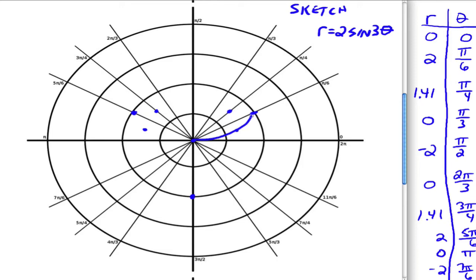Which, okay, and then at pi over 3, we're back here at the origin. And at pi over 2, we're down here at negative 2. You need a graph that looks something like that.